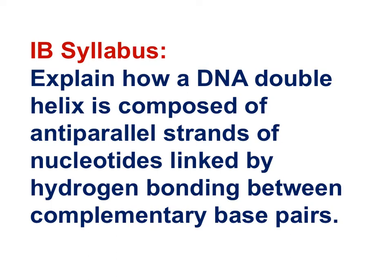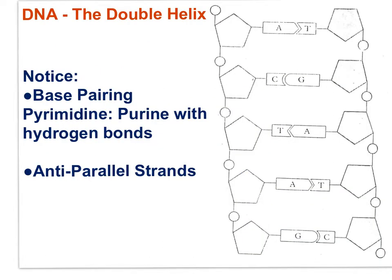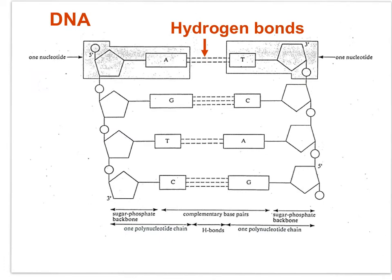Explain how a DNA double helix is composed of anti-parallel strands of nucleotides linked by hydrogen bonding between the complementary base pairs. In this image, we see a short segment of DNA. Each nucleotide monomer is composed of a deoxyribose sugar, a phosphate group, and a base attached to the number one carbon of the sugar. There are four bases: adenine, guanine, cytosine, and thymine. The purine bases, A and G, pair with pyrimidine bases, T and C. The two strands are anti-parallel, with complementary base pairing toward the center of the molecule. The base pairs are held together by hydrogen bonds.